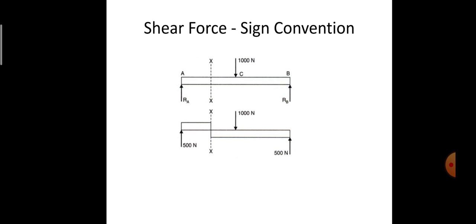Here I have taken an example for easy understanding of the sign convention of shear force. I have taken a simply supported beam AB which is carrying a load of 1000 Newton at exactly its midpoint. The reactions at supports RA and RB are equal to 500 Newton. I imagine the beam divided into two parts by section XX. The resultant of the load and reaction to the left of XX is 500 Newton, acting vertically upward.